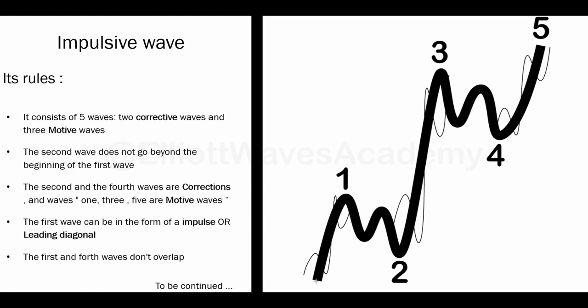The second rule says that Wave 2 cannot exceed the point that represents the beginning of Wave 1, even by one pip. This rule is very strict.